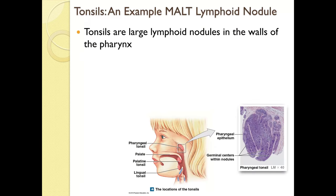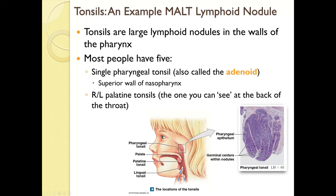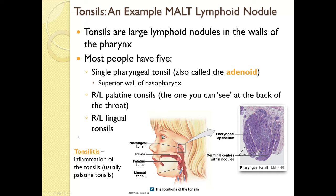Tonsils are large lymphoid nodules in the walls of the pharynx, containing collections of lymphoid nodules each with a germinal center. Most people have five tonsils: a single pharyngeal tonsil (also called the adenoid) on the superior wall of the nasopharynx behind the nasal cavity; right and left palatine tonsils visible at the back of the throat; and right and left lingual tonsils at the base of the tongue. Tonsillitis is inflammation of the tonsils, usually affecting the palatine tonsils.